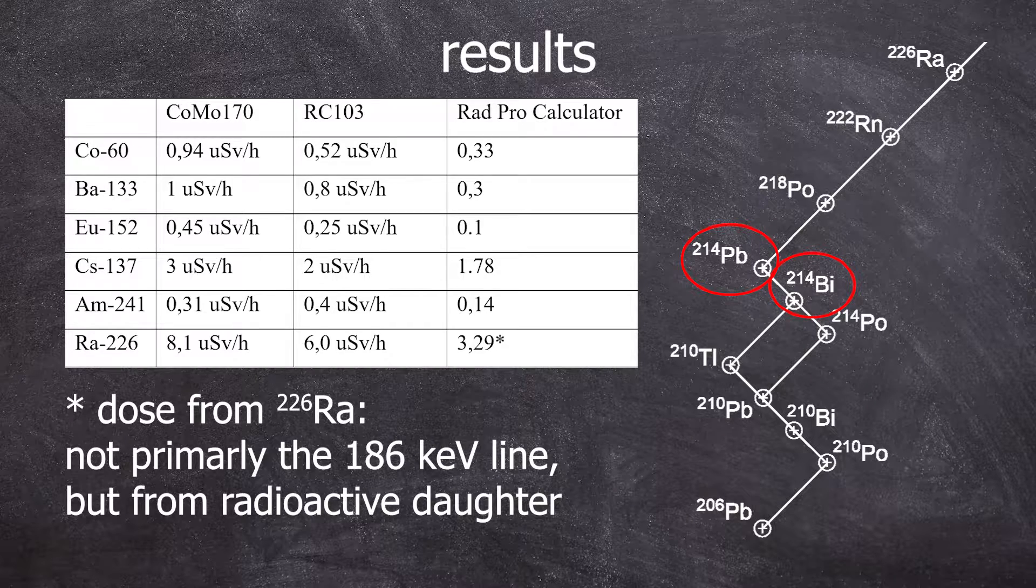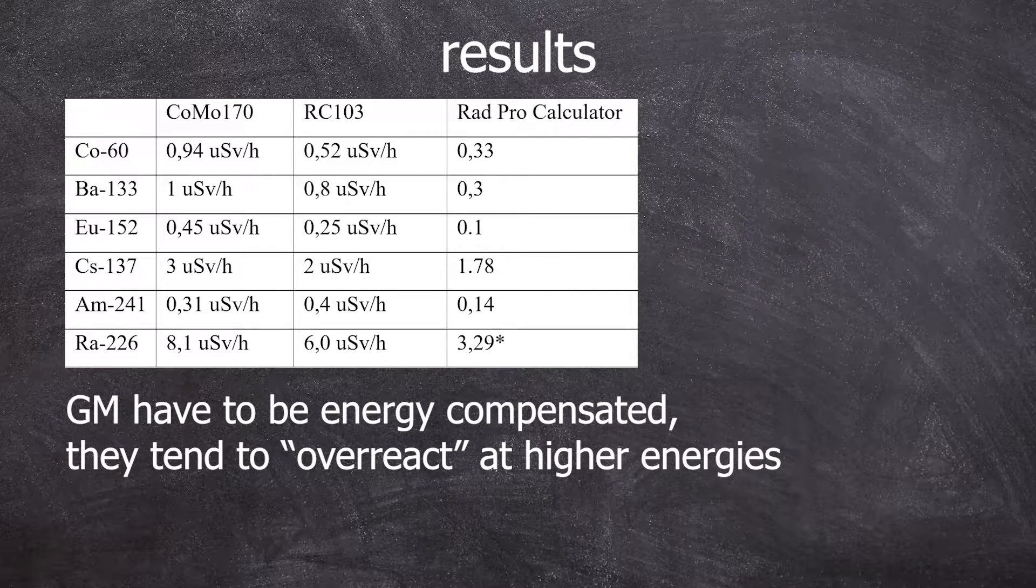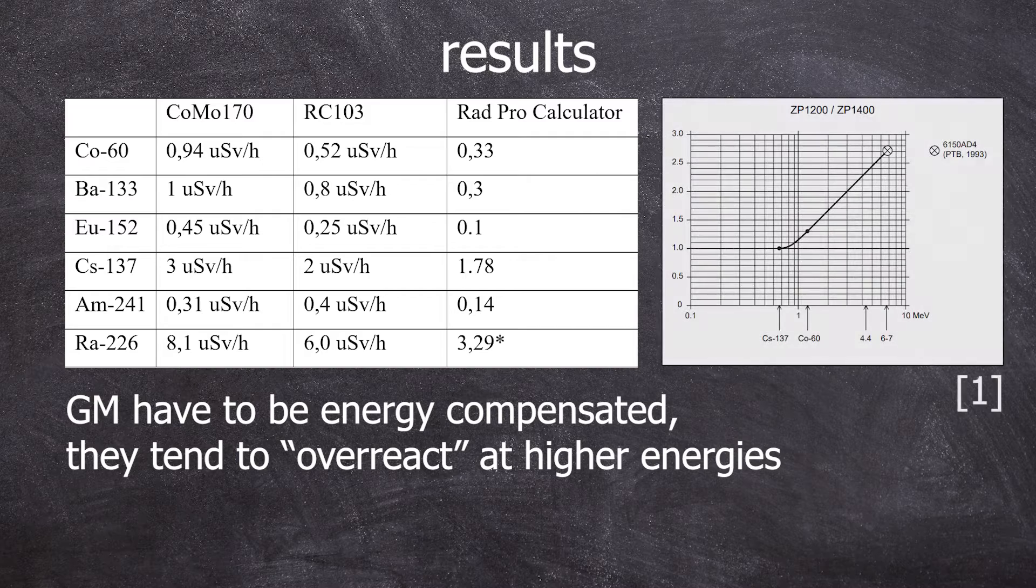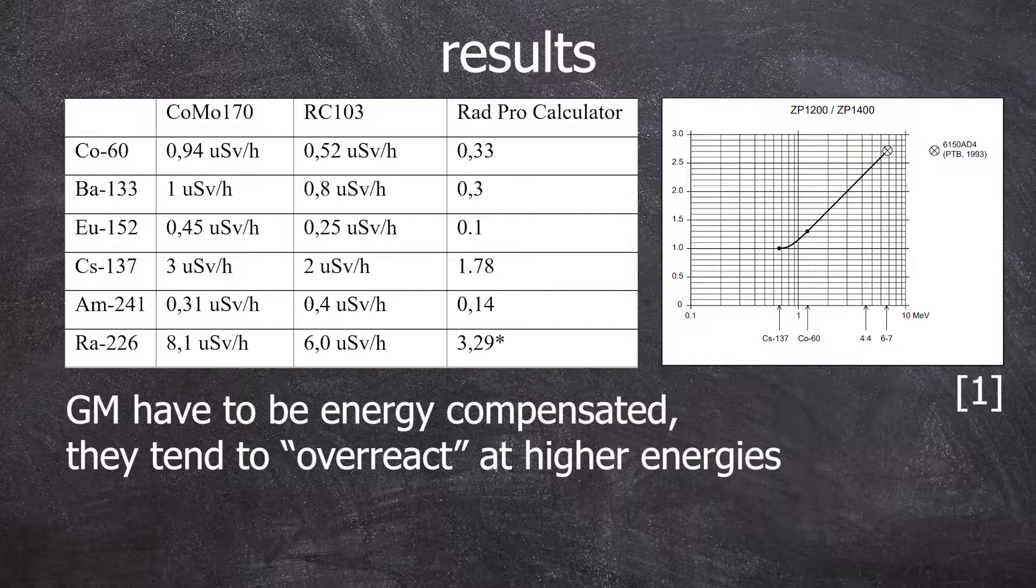So why do these results differ so much? A Geiger-Müller counter tends to show higher dose rate than a scintillation counter. Gas-filled detectors always have this issue and would need to be energy corrected to display the correct dose rate. Personally, I have two opinions because the dose rate generally is a conservative estimate and it's better to be on the safe side of caution. But on the other hand, I like accurate values, of course.